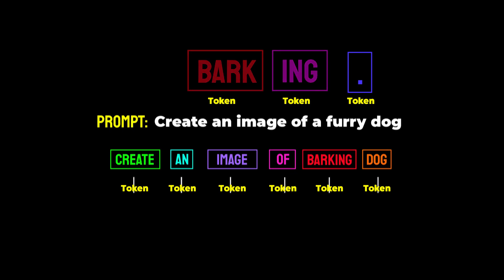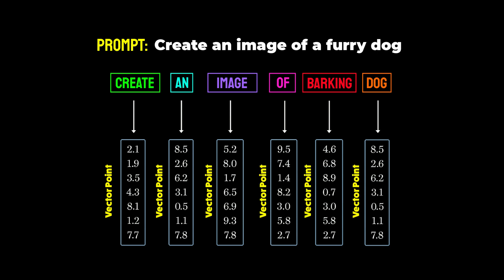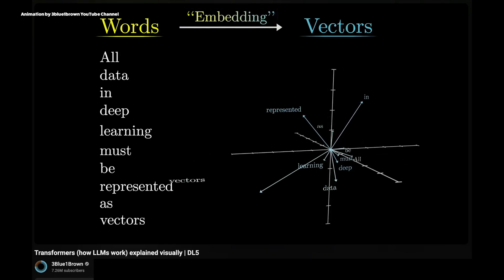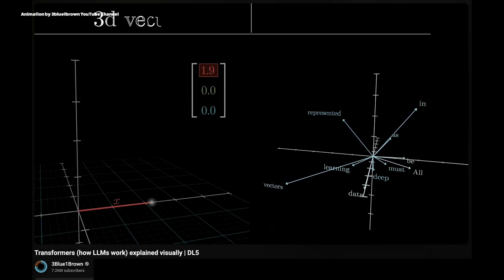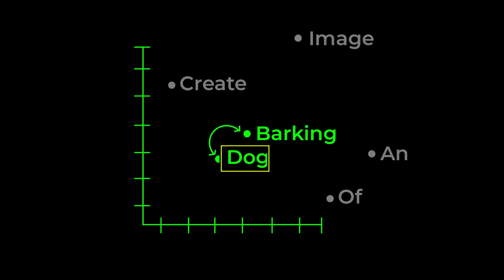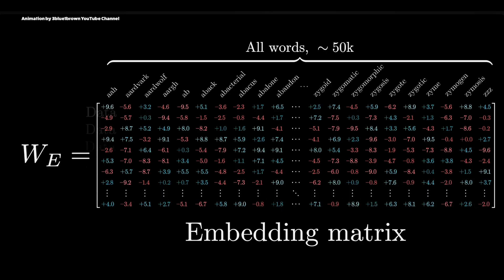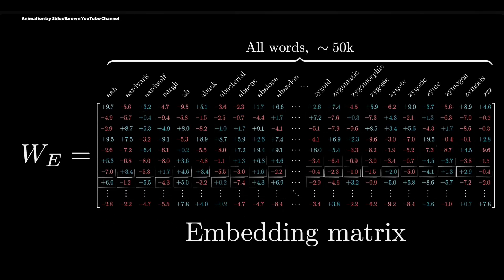Each word or token is given a vector point. LLMs don't understand words the way humans do — instead, they represent words as vectors, which are long lists of numbers, sometimes 12,000 numbers long. These numbers capture the position of a word in a massive invisible space called the embedding space or vector space, where similar words are placed close together. In our prompt example, the words 'dog' and 'barking' would be close together on this map because they were frequently shown associated during training.